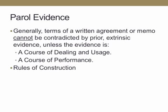The parol evidence rule basically requires the court to look at the written agreement and to not allow additional oral testimony that contradicts that written agreement. There may be some cases where oral evidence is needed to explain something in the contract that's ambiguous. There also may be an introduction of course of dealing and usage, or course of performance in the past, to show what the parties intended.